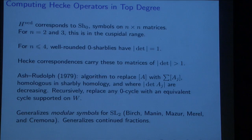It's nicest for us in the top degree of the virtual cohomological dimension. There you're computing with these Sharbleys that are square matrices, not rectangular matrices. For n equals 2 and 3, that is the cuspidal range. It's a fact about the well-rounded retract that all the well-rounded zero Sharbleys, all the square matrices you're going to get from the well-rounded case, they're all going to have determinant 1. This is not true at n equals 5 anymore. Hecke correspondences are going to carry these matrices to things of determinant much larger than one, some function of L.